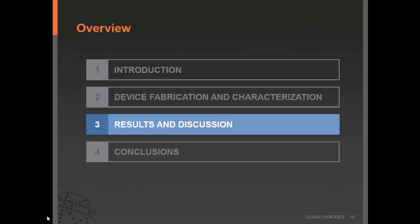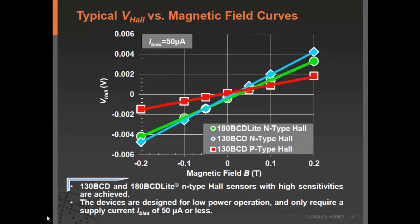This is a typical V-Hall versus magnetic field plot for a typical Hall sensor. There are three devices shown: the 130 BCD lite N-type Hall sensor (green line), the 130 BCD N-type Hall sensor (blue line), and the 130 BCD P-type Hall sensor (red line). Both N-type Hall sensors show good sensitivity, which is the slope of these curves. The P-type Hall sensor has lower sensitivity due to lower hole mobility. All these devices are designed for low-power applications, requiring only 50 microamps operating current, and can go down to 10 or 20 microamps if required.